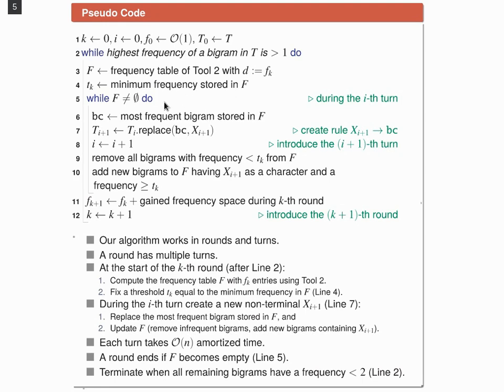In a turn, we determine the most frequent bigram by polling f. Let's say this is bc. Next, we replace all occurrences of bc in ti with a new non-terminal, let's say x i plus 1. And ti denotes the text in the ith turn. And the result is ti plus 1.